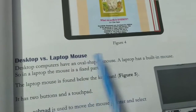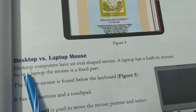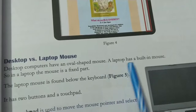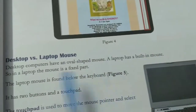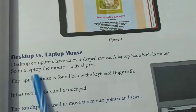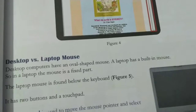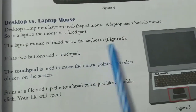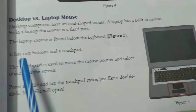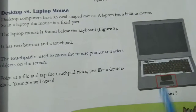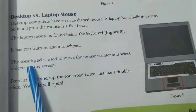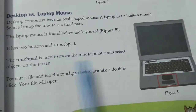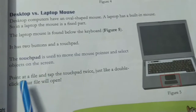Desktop vs Laptop Mouse. Desktop computers have an oval-shaped mouse. A laptop has a built-in mouse, so in a laptop the mouse is a fixed part. The laptop mouse is found below the keyboard. It has two buttons and a touch pad. The touch pad is used to move the mouse pointer and select objects on the screen.